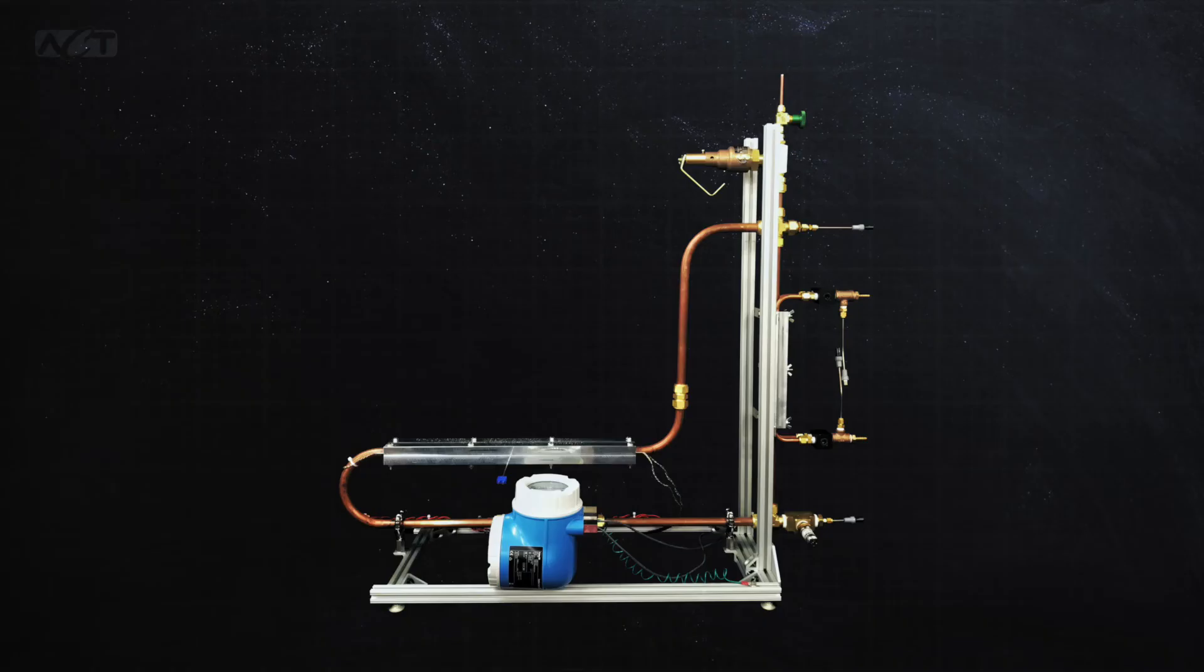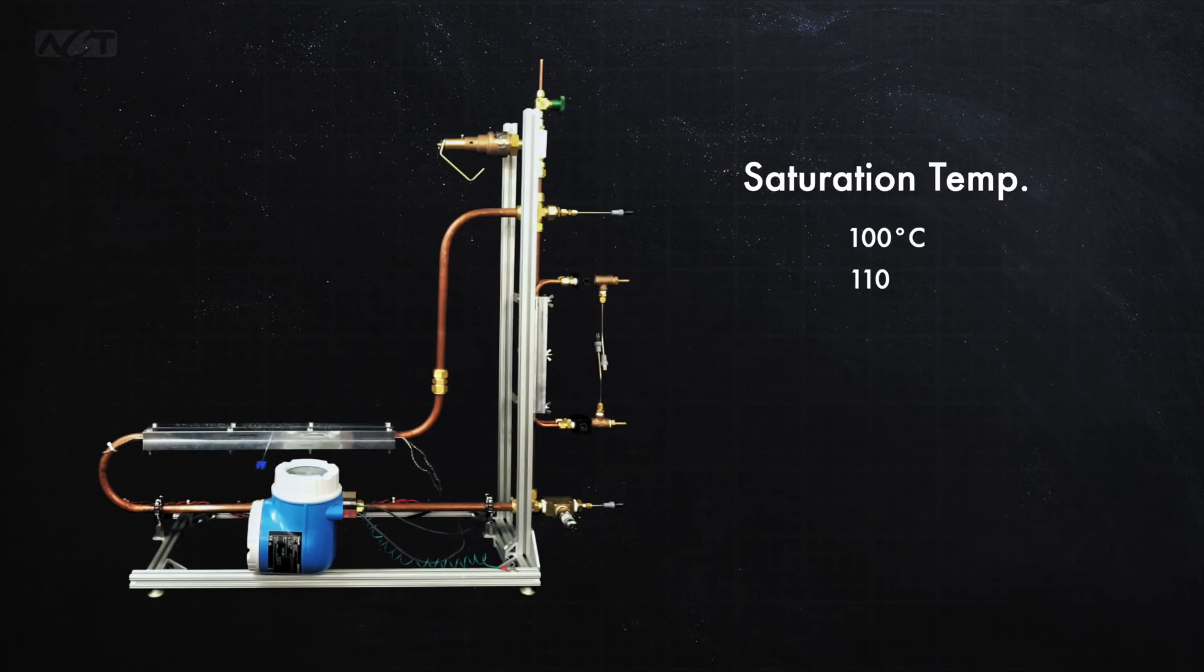So let's take a look at some of the modeling results that we've generated and what this tells us about loop thermosyphon operation. This is a scaled-down version of our solar-driven loop thermosyphon. The evaporator is about half a meter long. The water-cooled condenser is approximately 0.3 meters above the evaporator, and we have saturation temperatures of 100, 110, and 120, with the heat input varying between about 200 and 900 watts.